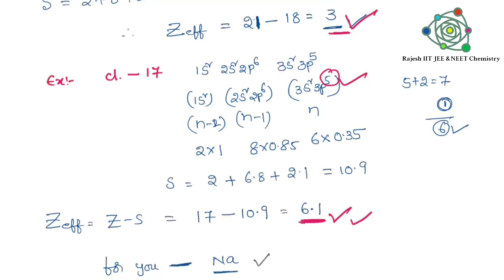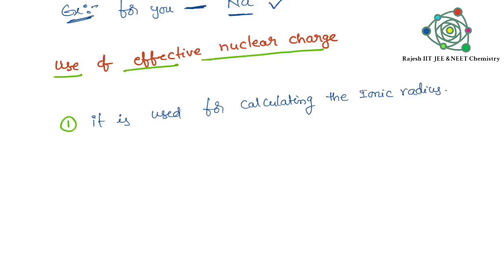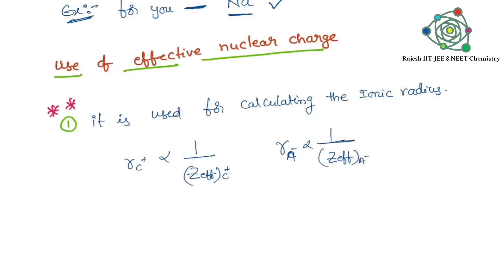For homework, I want you to try sodium. Now, coming to the next point — what is the use of effective nuclear charge? It is used for the calculation of ionic radius. The radius of a cation is inversely proportional to its effective nuclear charge. The radius of an ion is inversely proportional to effective nuclear charge. That is why effective nuclear charge is very useful in the calculation of ionic radius. Thanks for watching.